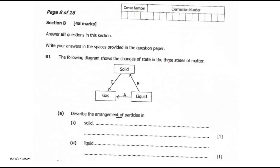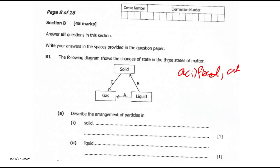The most important thing for A1 is that you understand the kinetic theory of matter and how the particles are arranged. In a solid, the kinetic theory says that the particles are fixed. Since this was one mark, that could have been enough, but you could also say they are close together.